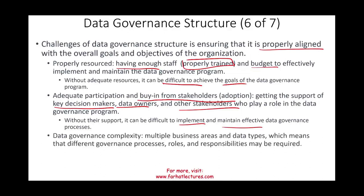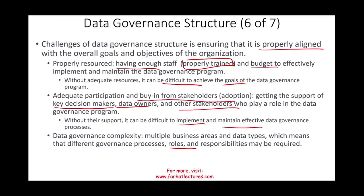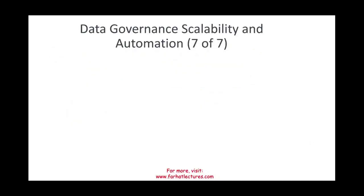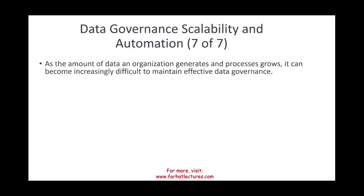Data governance complexity is also a challenge because you might have multiple business areas and data types, which means different governance processes, roles, and responsibilities may be required. Think of companies that grow through acquisition and consolidation — they could have all sorts of data from different governance processes that need to be unified. As the amount of data grows, it becomes increasingly difficult to maintain effective data governance unless you have a good governance structure.